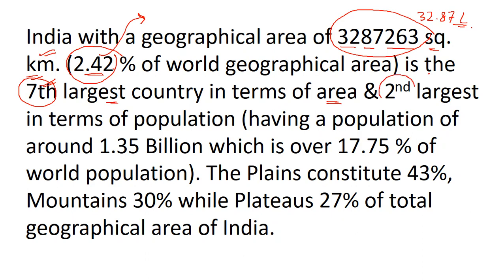In terms of population, India is the second largest country in the world, having a population of over 1.35 billion. This data varies because there is an increase in the number of people on a daily basis. It accounts for more than 17.75% to around 18% of the world population, and India stands second in rank after China.